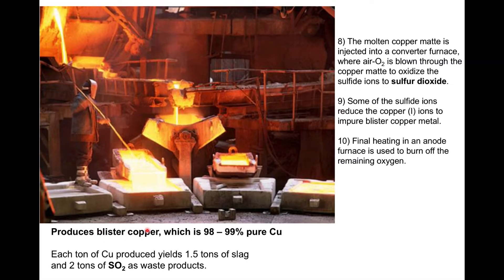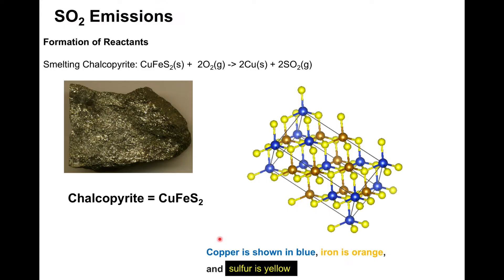The next step is to take that matte copper and bubble oxygen through it. Oxygen reacts with sulfur in the matte—oxygen plus sulfur equals SO₂—and historically that SO₂ was vented to the atmosphere, producing blister copper, which is about 98–99% pure copper. So one of the byproducts of smelting is sulfur dioxide gas, and historically SO₂ was vented directly to the atmosphere. The question is: does that have negative environmental impacts?